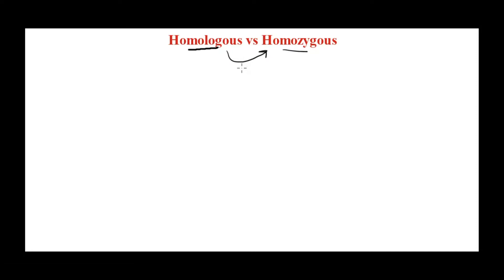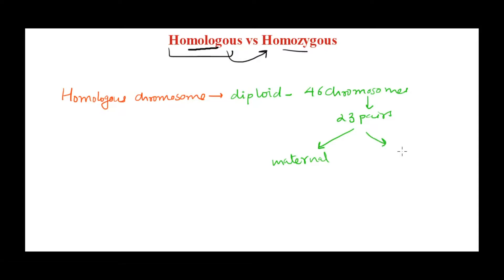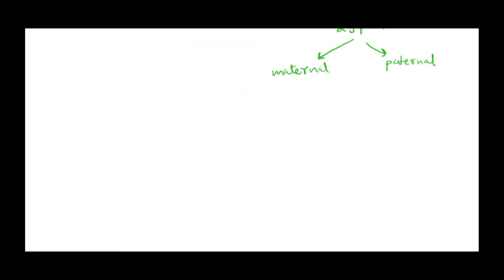The term homologous we use with reference to homologous chromosomes. In humans, we are a diploid organism because we have a total of 46 chromosomes — that means 23 pairs. Half of which comes from the mother (maternal chromosomes) and half of which comes from the father (paternal chromosomes). That's how we get a total of 46 chromosomes.